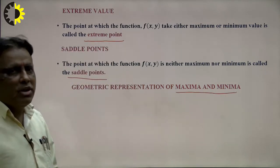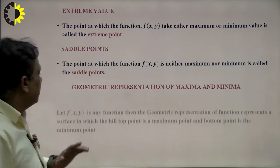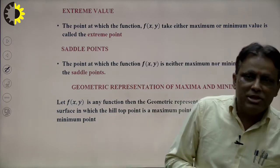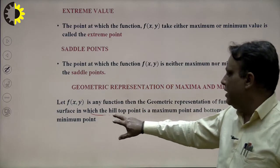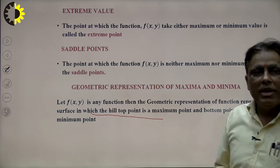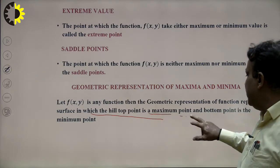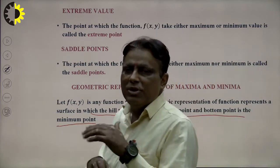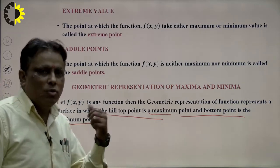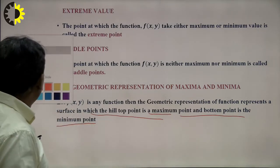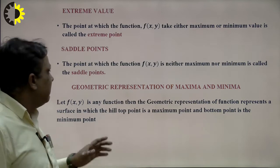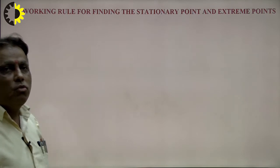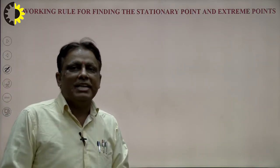If f(x,y) is any function, its geometric representation is a surface in which the hilltop of a point is a maximum point and the bottom point is known as the minimum point. We can say that the highest point is known as maxima and the lowest point is known as minima, and they occur in the plane.